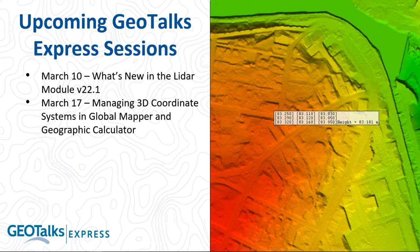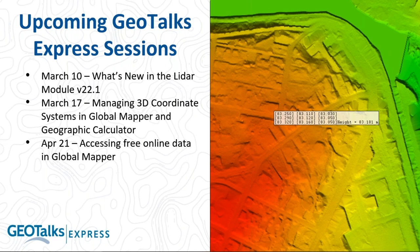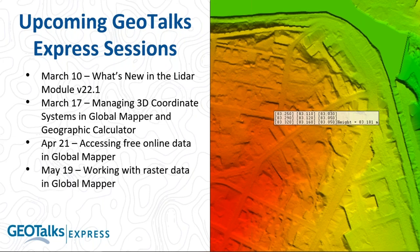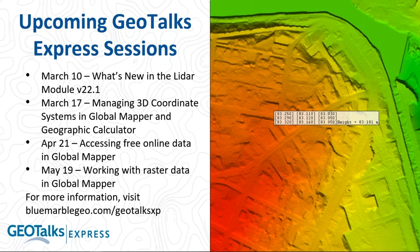Some other webinars we have coming up: March 17th is managing 3D coordinate systems in Global Mapper and Geographic Calculator — if you need to do advanced geodetic work, like if you're a surveyor managing coordinate systems. On April 21st, we'll be covering accessing free online data in Global Mapper, a really popular functionality with a lot of prebuilt sources. And May 19th, we'll be talking about working with raster data in Global Mapper, covering imagery and other types of raster data like land cover. You can sign up on our website at bluemarblegeo.com/geotalks.